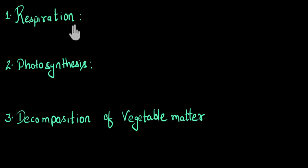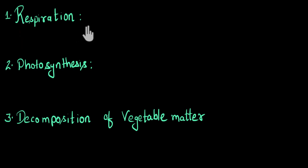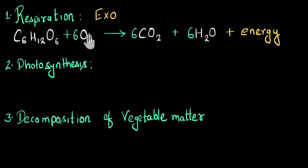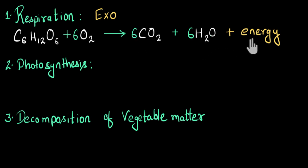Respiration is a common process that even happens within us. Our cells take in oxygen and use that to break down glucose, and in this process we get the energy that we need to survive, run and play. So this process gives out more energy — that's why respiration is exothermic in nature. In the chemical reaction, oxygen is utilized to break down glucose and gives out carbon dioxide, water, and energy is released, which helps us do our activities.